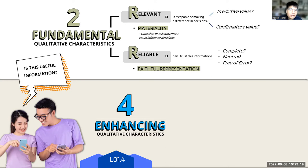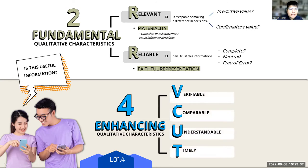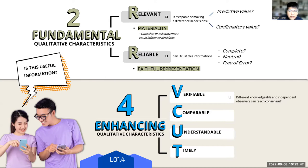Moving on to the four enhancing qualitative characteristics — to remember them easily, use the acronym V-CUT. First: it has to be verifiable, meaning if you ask different knowledgeable or independent observers, they can reach a consensus that the information is correct and free of error. If you ask expert 1, expert 2, or expert 100, and they all reach a consensus that the information is accurate, then that information is verifiable.